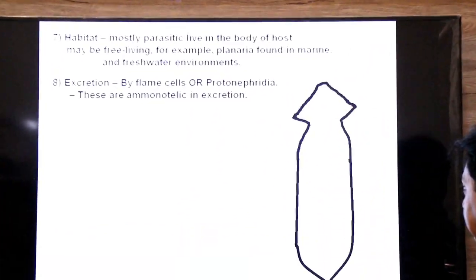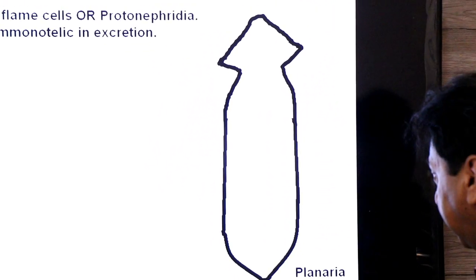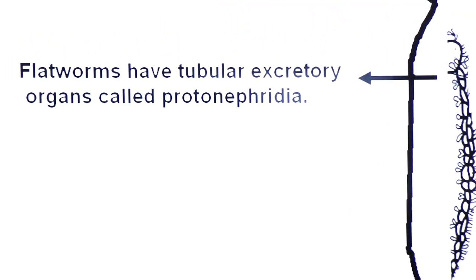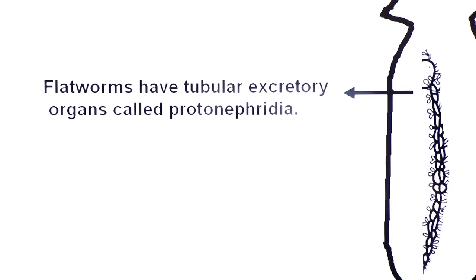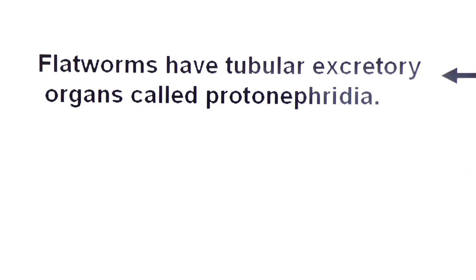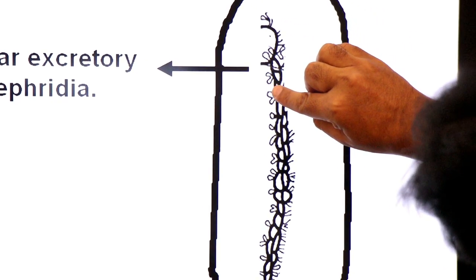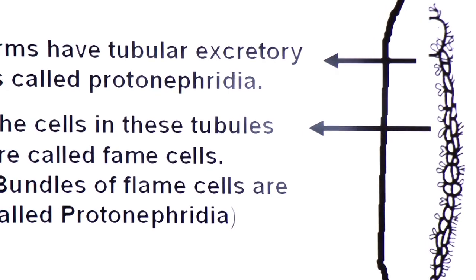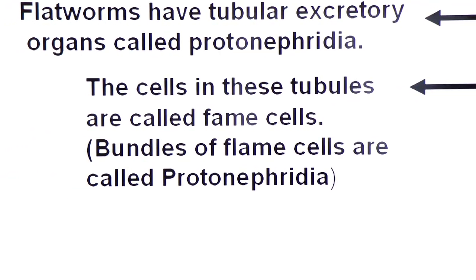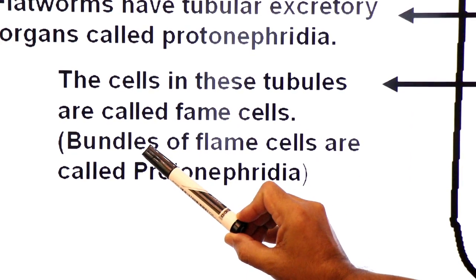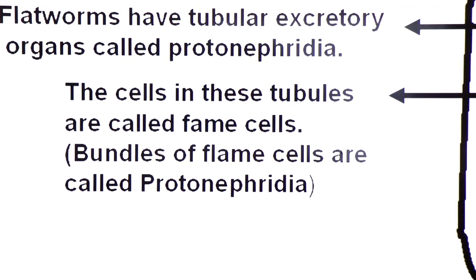This is the diagram showing Planaria. You can see a tubular excretory system here — this is called protonephridium (singular) and protonephridia (plural). Flatworms have tubular excretory organs called protonephridia. Inside these tubes, you can see some bulb-like cells — these bulb-like cells are called flame cells. The cells in these tubules are called flame cells; in other words, bundles of flame cells are called protonephridia.